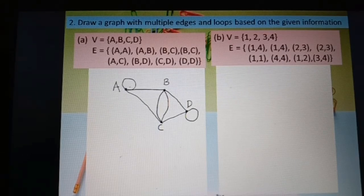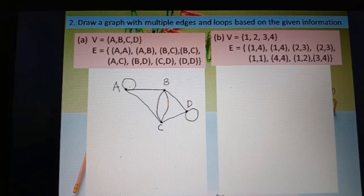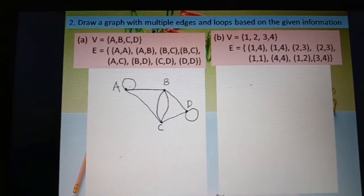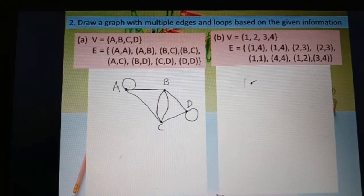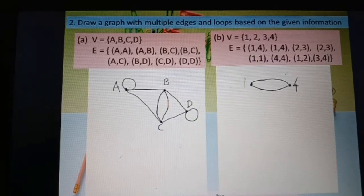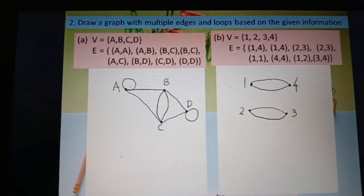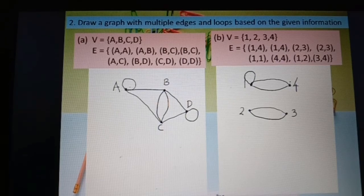Now look at part b. Set of vertices: 1, 2, 3, 4. We have multiple edges 1–4, 1–4; multiple edges 2–3, 2–3; loop 1–1; and loop 4–4. Start by drawing vertices 1 and 4 with multiple edges between them. Then vertices 2 and 3 with multiple edges. Then loop on 1 and loop on 4.